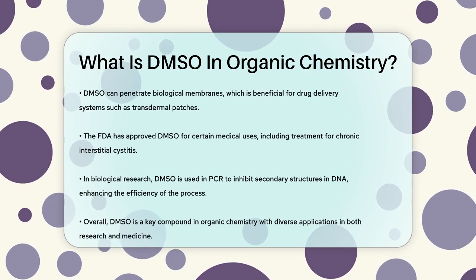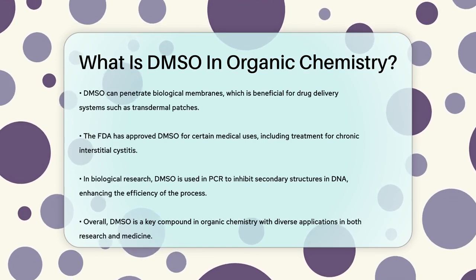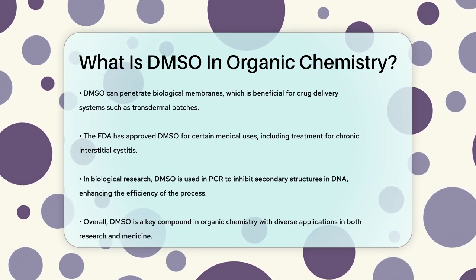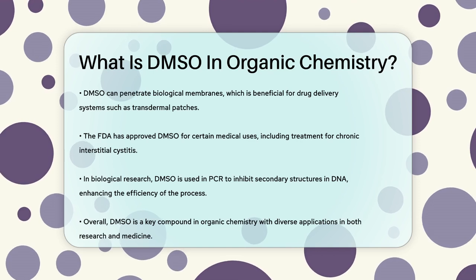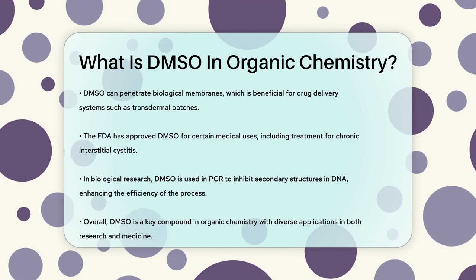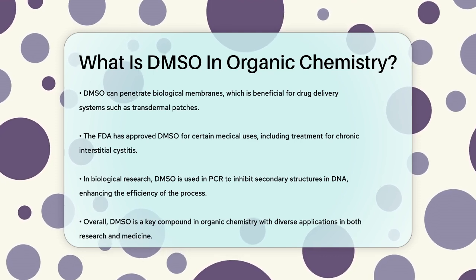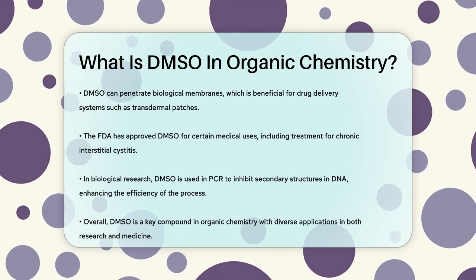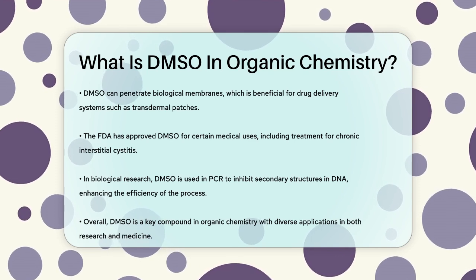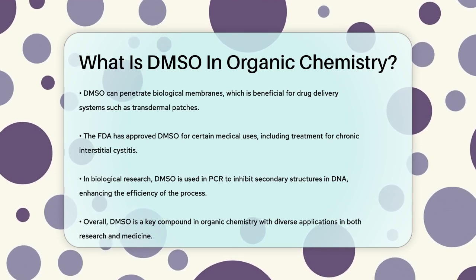DMSO is also used in biological research, particularly in polymerase chain reaction (PCR), to inhibit secondary structures in DNA templates or primers. This helps in reducing interfering reactions and improving the efficiency of the PCR process.